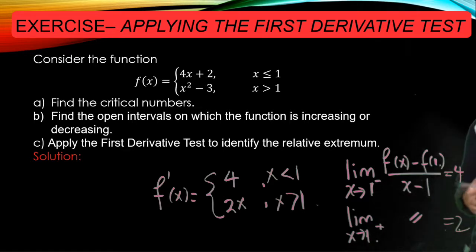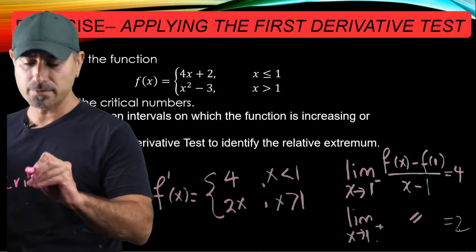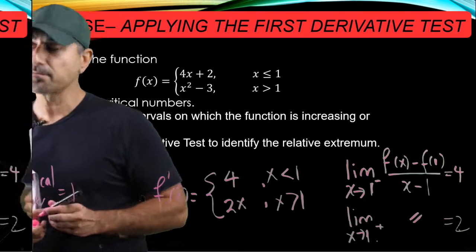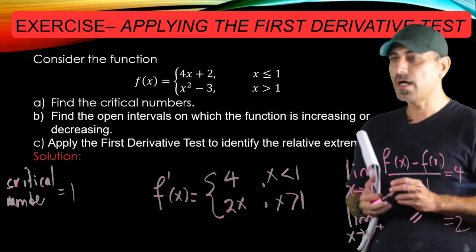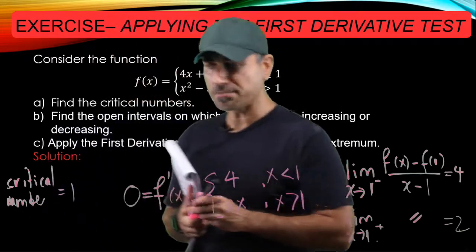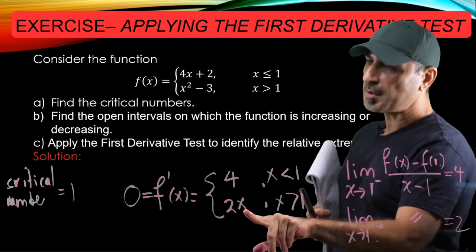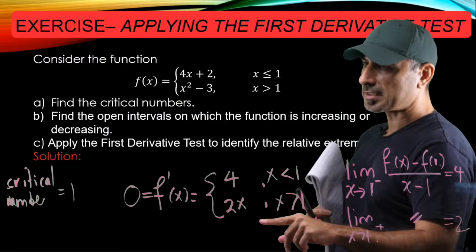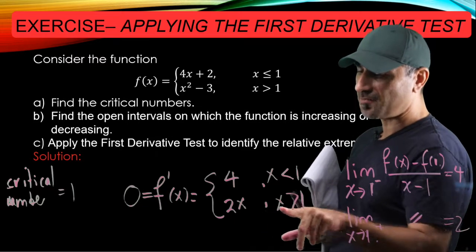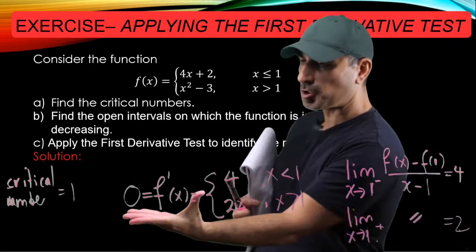In other words, f is not differentiable at x equals one, which makes one a critical number. The question is whether there are any other critical numbers. We should set f prime equal to zero — for the left piece it's just a constant so there's no solution, and for the right piece 2x equals zero gives x equals zero, but x equals zero is not in the domain of that piece since it's valid only for x greater than one. So there are no other critical numbers.